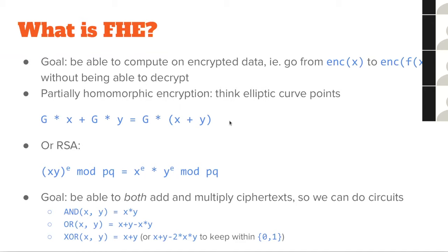This already provides a lot of value. And if instead of adding you want to multiply, you can just use RSA. With simple RSA encryption, x^e: then (xy)^e = x^e * y^e. So if you have the ciphertext for x and the ciphertext for y, you can create the ciphertext for xy. So we have a family of schemes that gives us additive homomorphism, and a family that gives us multiplicative homomorphism.